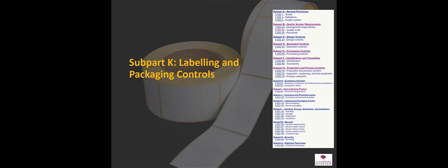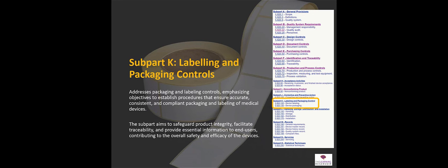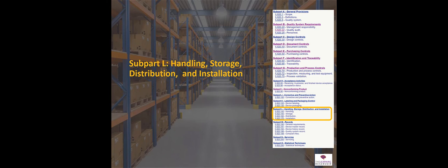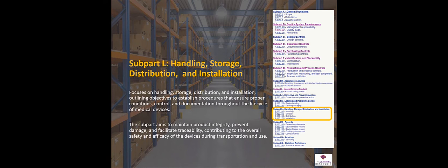Sub-part K outlines the requirements for labeling and packaging controls — we want to have our devices labeled and packaged correctly, and those requirements are covered under sub-part K. Sub-part L covers handling, storage, distribution, and installation of your devices. You want your devices handled correctly, stored correctly, sent out to patients or hospitals correctly, and installed correctly. It's critical that these important parts of the medical device life cycle are controlled, and the requirements for that are found in sub-part L.